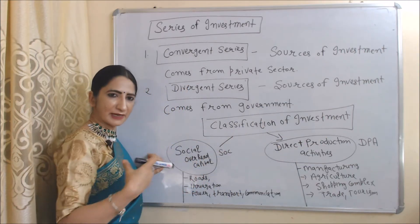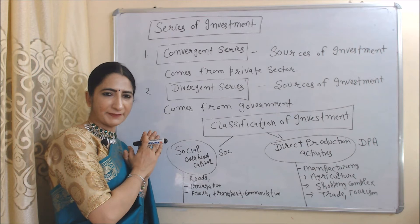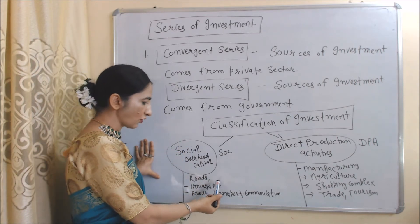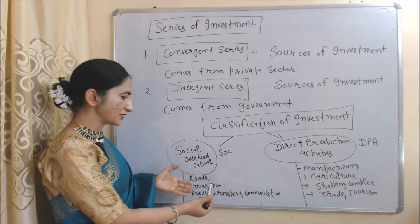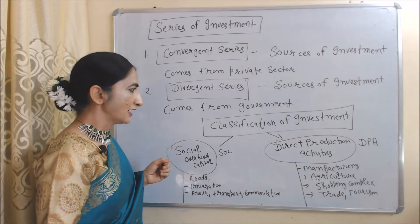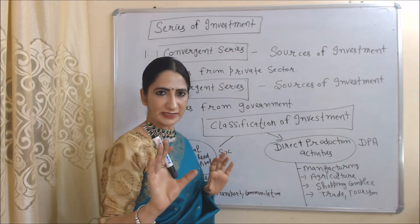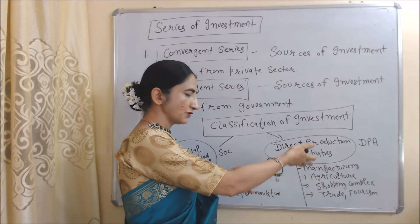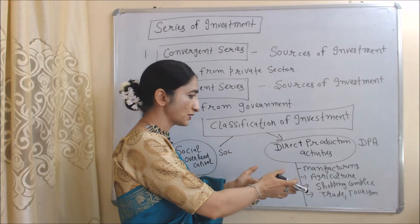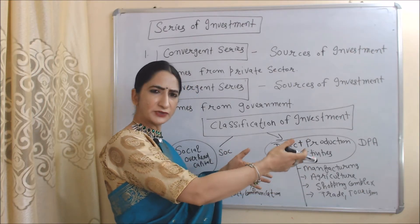Investment on social overhead capital is done by the government. For example, investment on roads, irrigation, power, transportation, and communication. Investment on DPA is done by the private sector. For example, investment on manufacturing, agriculture, shopping complexes, and trade and tourism.